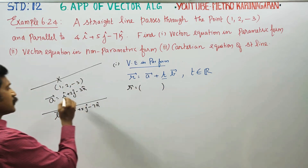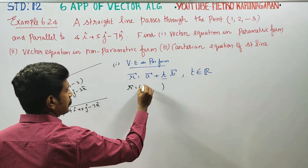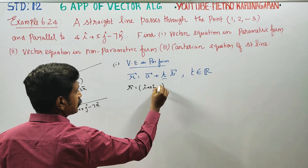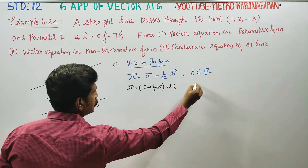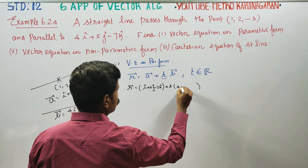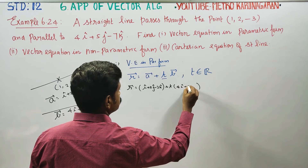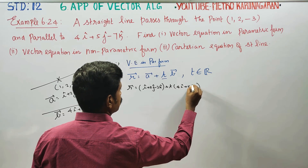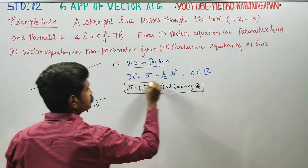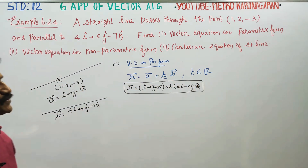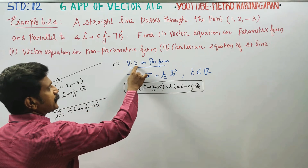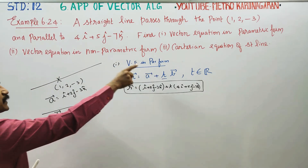Now substitute the values. The a vector equals i + 2j - 3k, plus t into the b vector, which is 4i + 5j - 7k. This is your first answer — the vector equation of the straight line in parametric form.